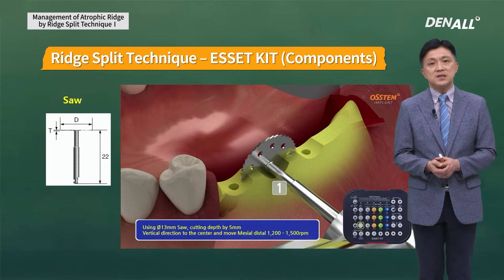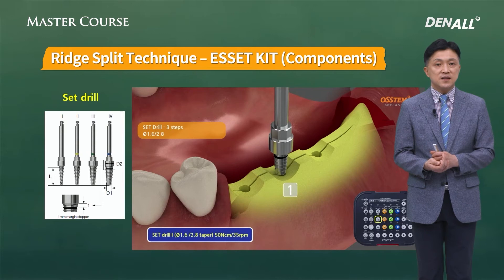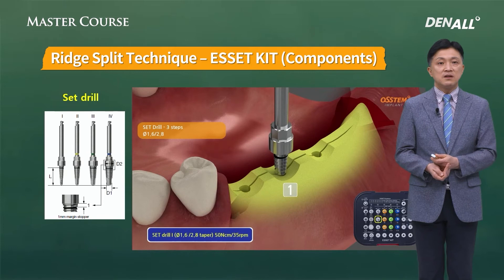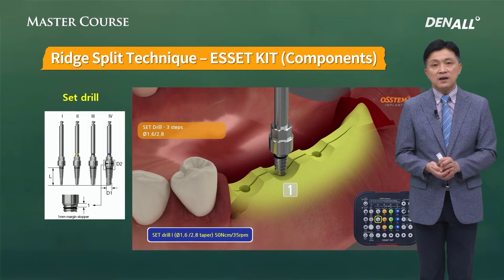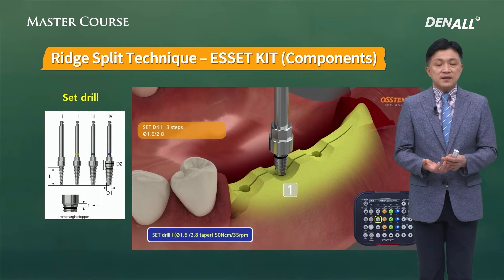In most cases, you move forward without vertical osteotomy. In distal free-end cases, only horizontal osteotomy is formed. The set drill, after osteotomy, splits the ridge. There are four set drills: numbers 1, 2, 3, and 4. Using the asset kit, you can place 4.0 mm or 4.5 mm implants with these four set drills.